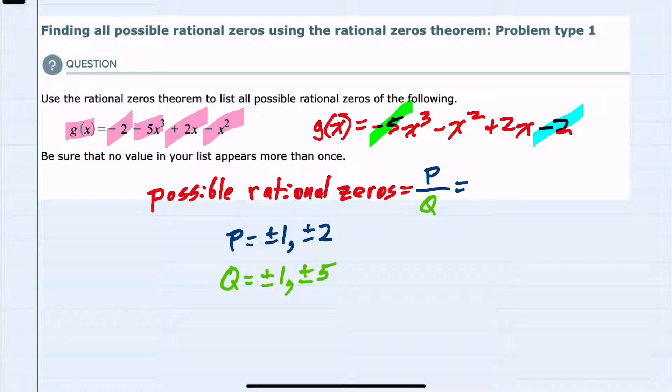In writing these factors as possible fractions, I could see that p could be ±1 over a q of ±1, which would just simplify to ±1.